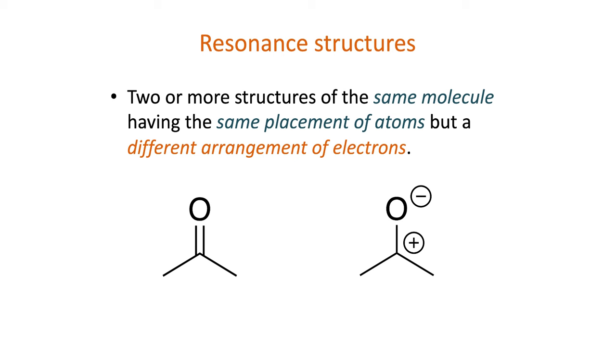Resonance structures represent how electrons are delocalized through all or part of a molecule, but it's important to know that these structures don't actually exist individually, and the electrons are not switching places as indicated. Instead, the true molecule is a blending, or hybrid, of resonance structures.